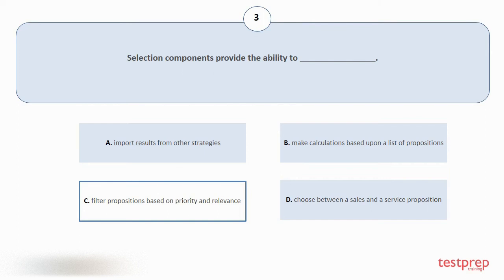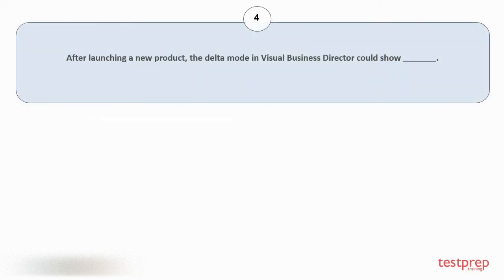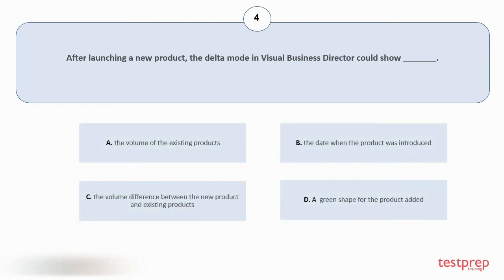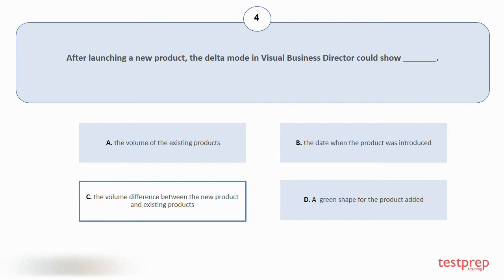Question number four: After launching a new product, the delta mode in Visual Business Director could show what? Your options are: A) the volume of the existing products; B) the date when the product was introduced; C) the volume difference between the new product and existing products; D) a green shape for the product added. The correct answer is option C.